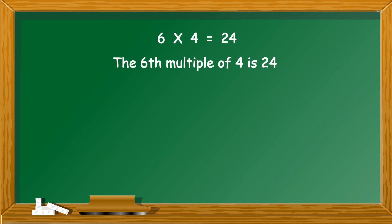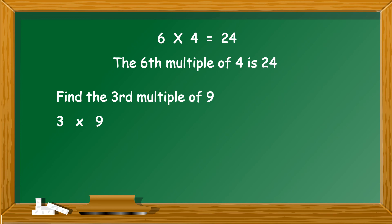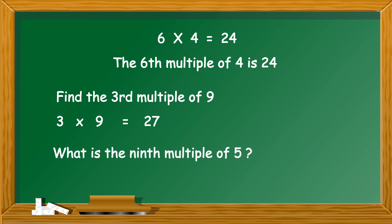Finally, consider the statement: the sixth multiple of 4 is 24, where the term 'multiple' indicates multiplication of the given numbers. For example, find the third multiple of 9 — multiply 3 into 9, which is equal to 27. Or, what is the ninth multiple of 5? Multiply 9 into 5, which equals 5 into 9, which is equal to 45. Thank you.